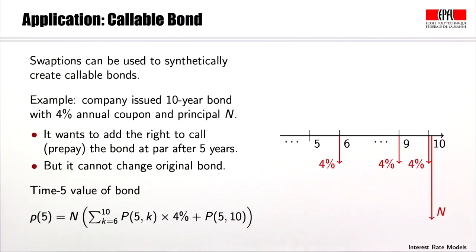Here is an application. Swaptions can be used to synthetically create callable bonds. Suppose a company has issued a 10-year bond with a 4% annual coupon on a principal of N.